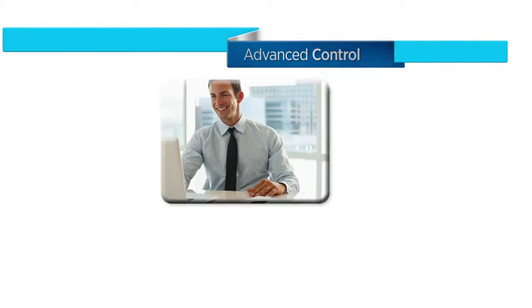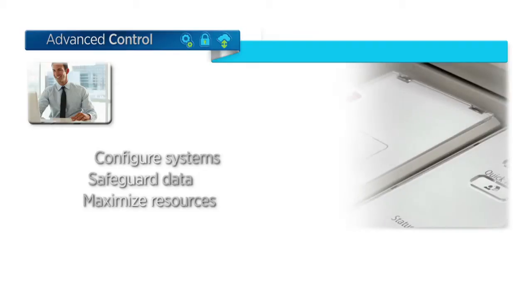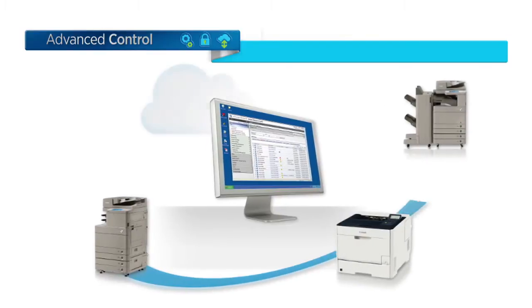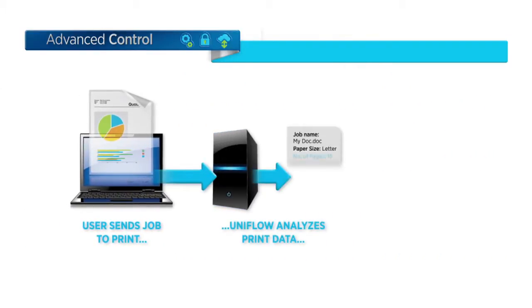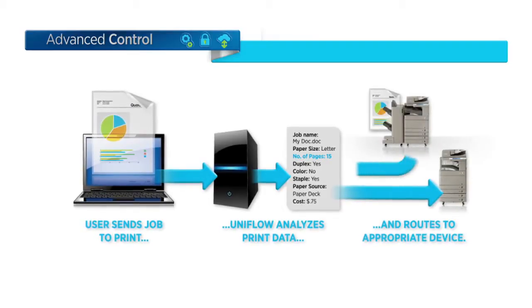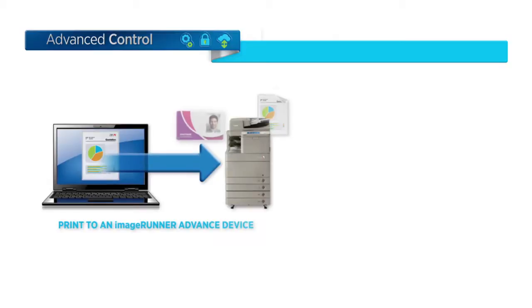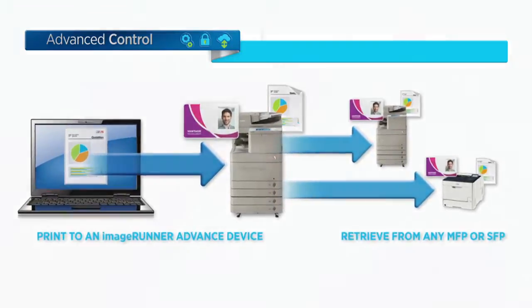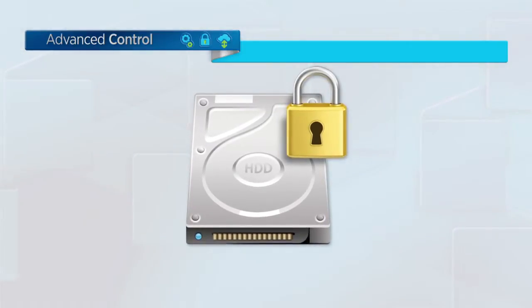Advanced Control. Whether you manage a fleet of devices or a single unit, you have the power to configure a system, safeguard data, and maximize resources right at your fingertips, and even through the cloud. Maximize resources with the ability to track, manage, and influence user behavior. Create an environment that allows authenticated users to print to any connected device. And at every step, the ImageRunner Advanced helps protect your sensitive information.